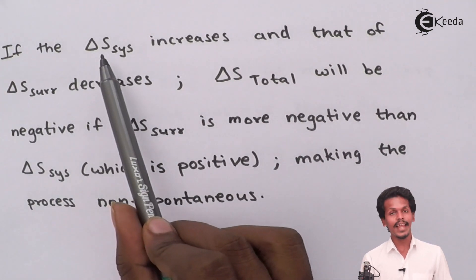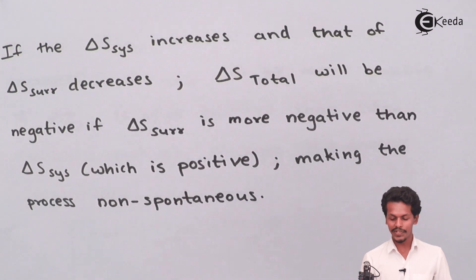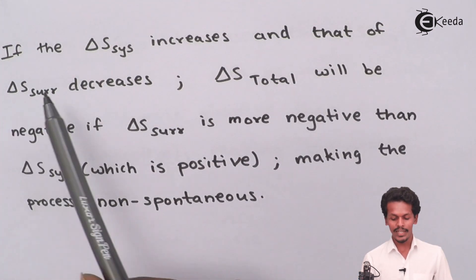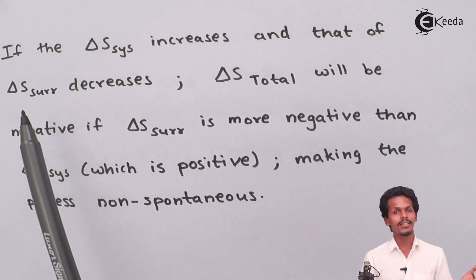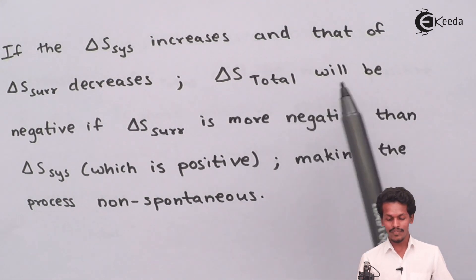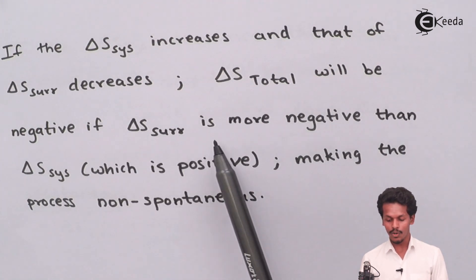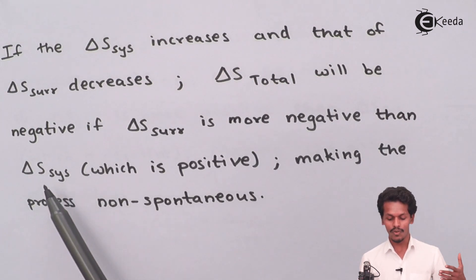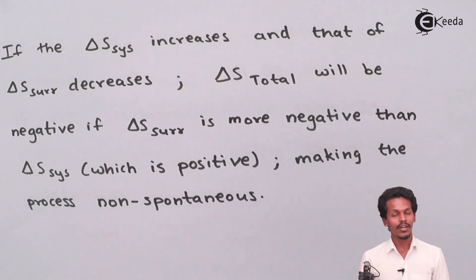Case 2: Suppose the entropy of the system increases (positive value) but the entropy of the surrounding decreases. If ΔS_surrounding is more negative than ΔS_system is positive, then ΔS_total will be negative, making the process non-spontaneous.